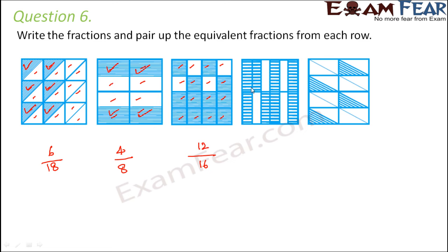Here again we have rectangles: 1, 2, 3, 4, 5, 6, 7, 8, 9, 10, 11, 12. Total 12, out of which 8 are shaded.